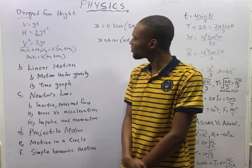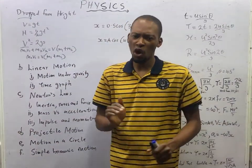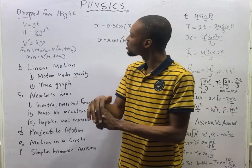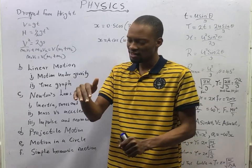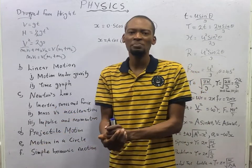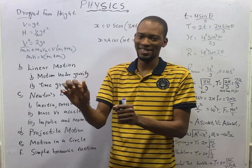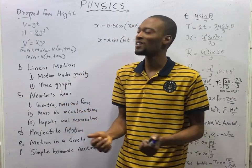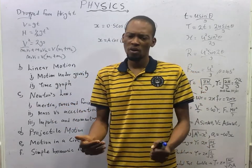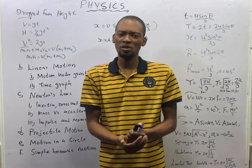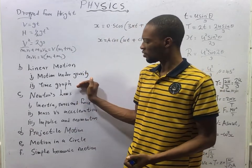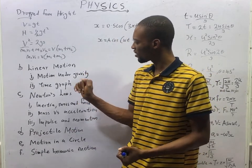This is episode number 17 of the 120 Days to Jam Physics with Flash Isaac. In this episode, we shall be putting finishing touches to motion as a topic. In the last two episodes, we introduced motion under gravity.